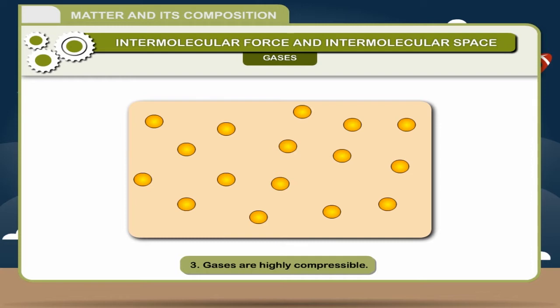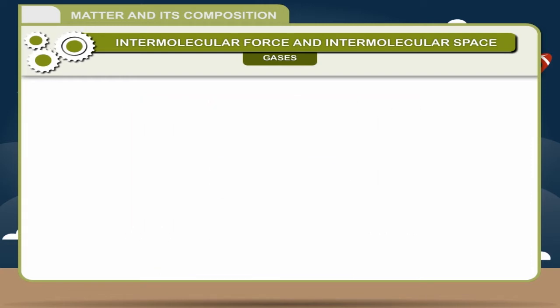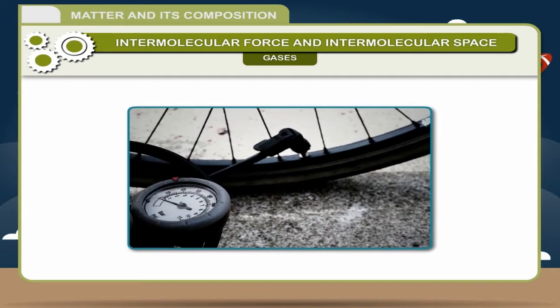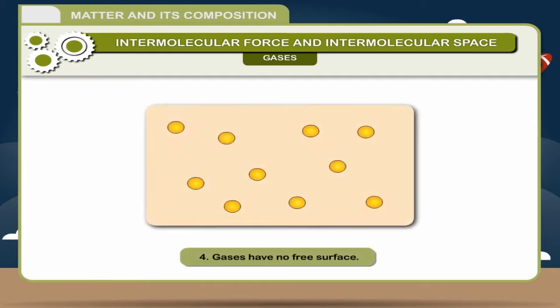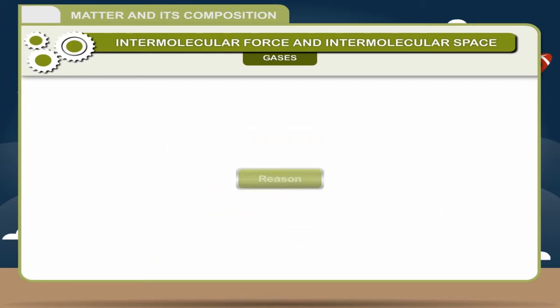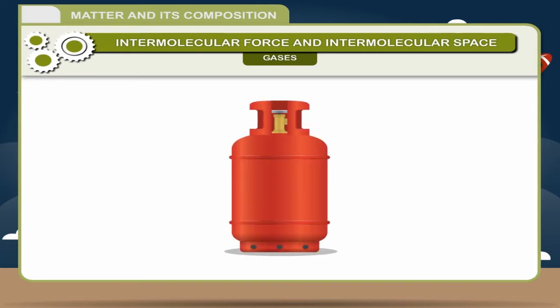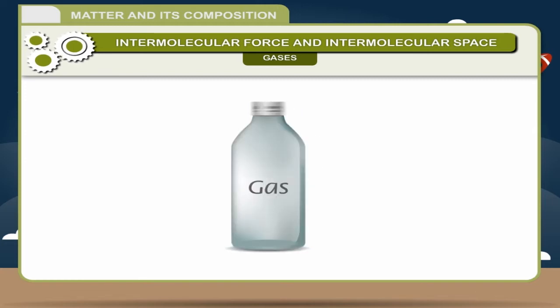Gases are highly compressible. Reason: Owing to large intermolecular spaces between their molecules, gases can be easily compressed. What does a mechanic do when he fills air in your cycle's tube? He allows compressed air to enter the cycle's tube and fill it. Gases have no free surface. Reason: If you keep a gas in a container, then to avoid escaping of that gas, you must seal the container. For example, LPG cylinder at home is sealed as it contains cooking gas. Hence, gases have no free surface. It is also difficult to transport gases as they expand or contract with change in temperature or pressure.